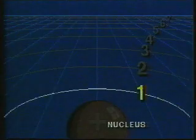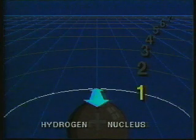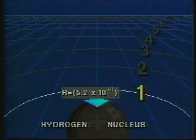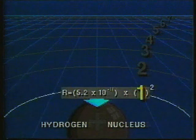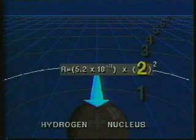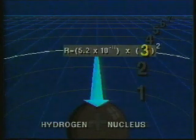Bohr predicted that for the hydrogen atom, the radius of those allowable orbits was given by an equation directly related to the orbit number. Because the radius depends on the square of the orbit number, the distance to successive orbits increases rapidly.